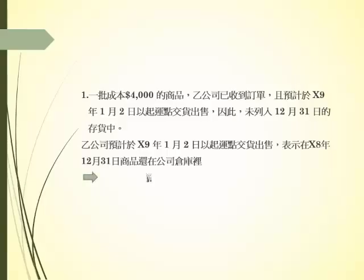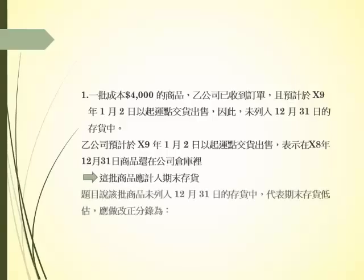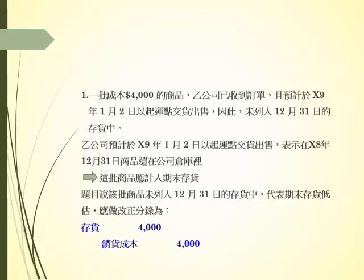第一个，乙公司已经收到订单，预计在X9年1月2号以起运点交货的条件出售，因此并没有列在12月31号的存货里面。这表示在X8年12月31号的时候这些商品还在公司的仓库里，应该要进入期末存货才对。题目说这批商品并没有列在12月31号的存货当中，这就代表期末存货低估了。更正分录是借存货贷销货成本4,000。